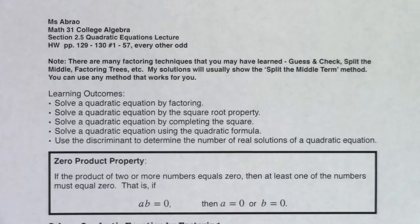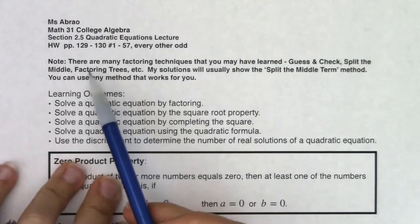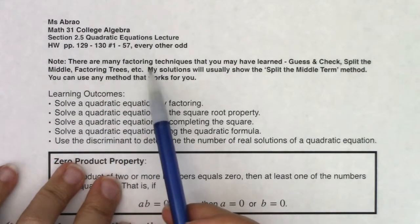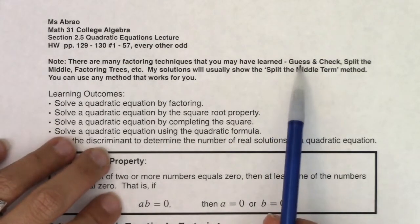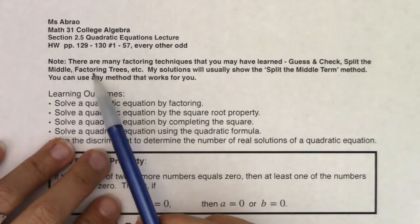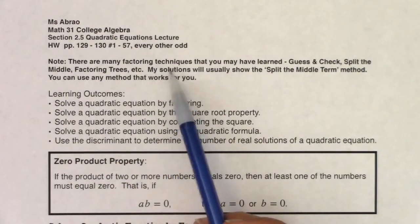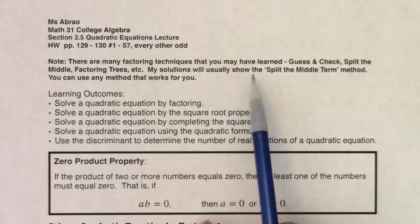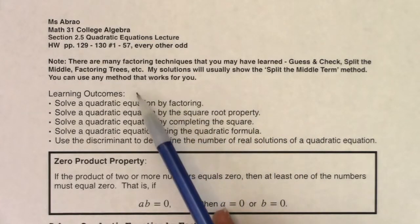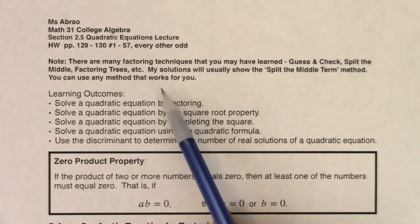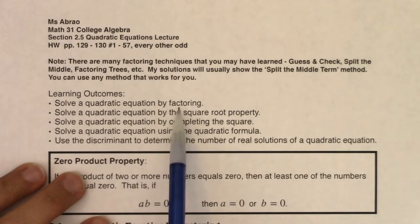Hey Math 31, let's take a look at section 2.5, the quadratic equations lecture. There are many factoring techniques you may have learned depending on which teacher you came from: guess and check, split the middle, factoring trees, Punnett squares, and all sorts of different techniques for factoring quadratics. My solutions will usually show the split the middle term method or potentially guess and check, but you can use any method that works for you. The first learning outcome is to solve a quadratic equation by factoring.